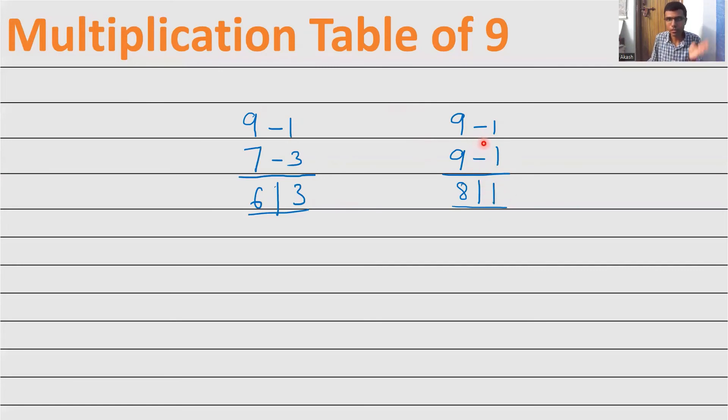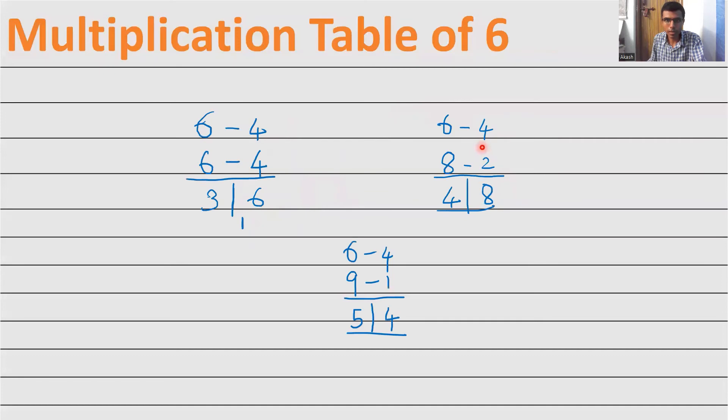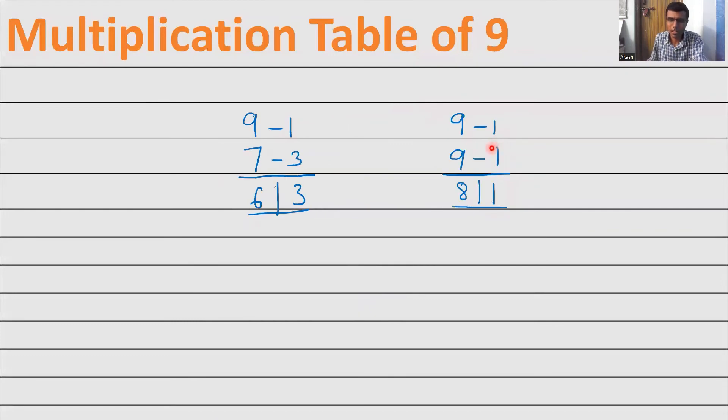See, you can use this method for tables of like 6, 7, 8 and 9. In fact, you could use this method for 6 twos are also, but it's like, you would get negatives and all. It's better to just remember tables of 1 to 5. Just remembering 1 to 5 and then you can use this method for 6, 7, 8 and 9.